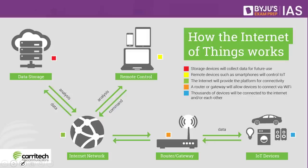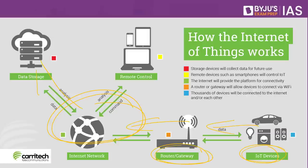How does IoT work? IoT creates an ecosystem with web-enabled smart devices such as smartphones and computers embedded into the system, along with advanced processors, sensors, and communication hardware that collect, send, and receive data. Sensors collect all information from IoT devices; the data is sent via a router or gateway to the Internet network, stored on a server, enabling remote control of connected things. Devices communicate with each other without requiring human intervention.